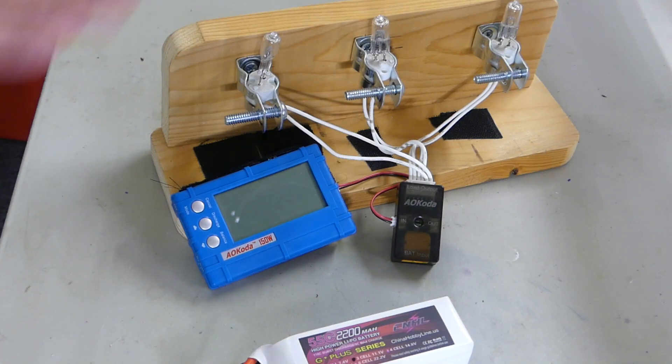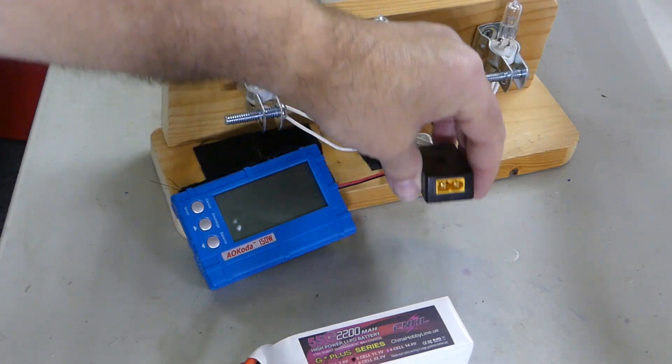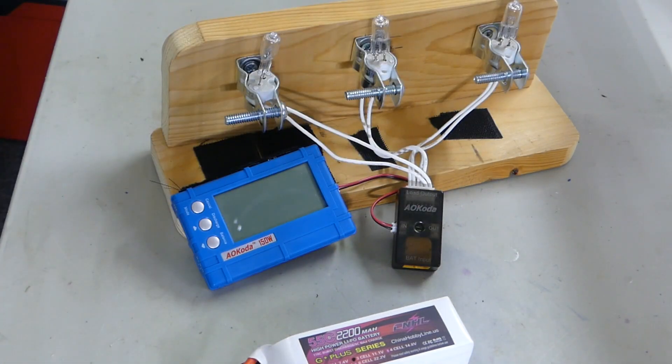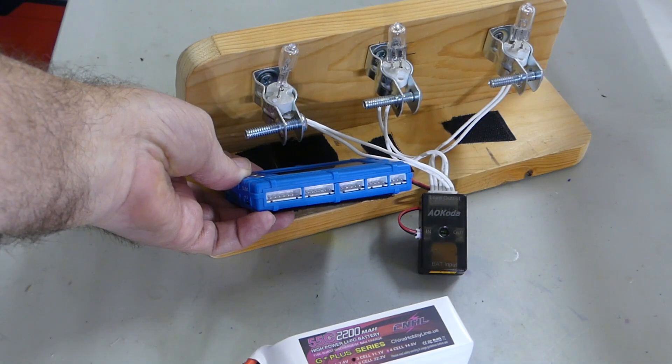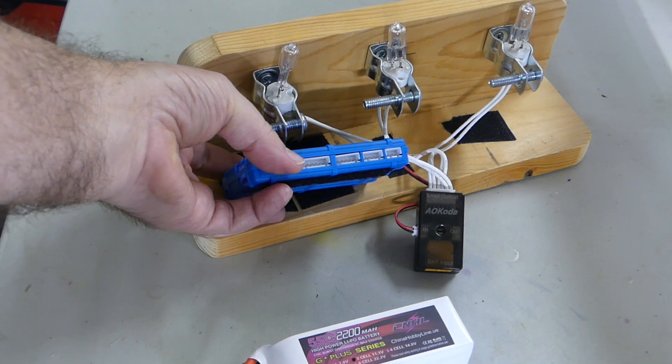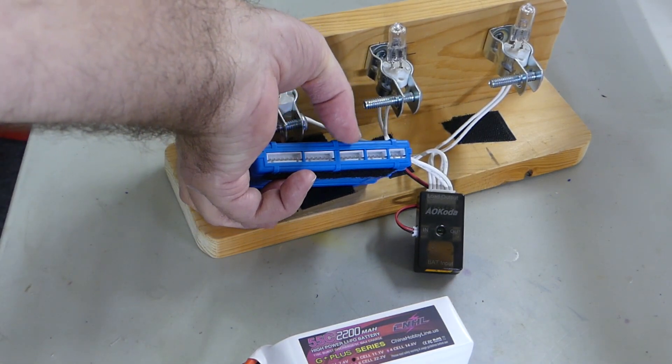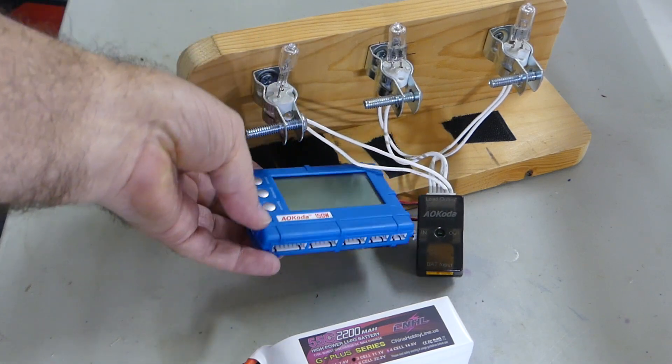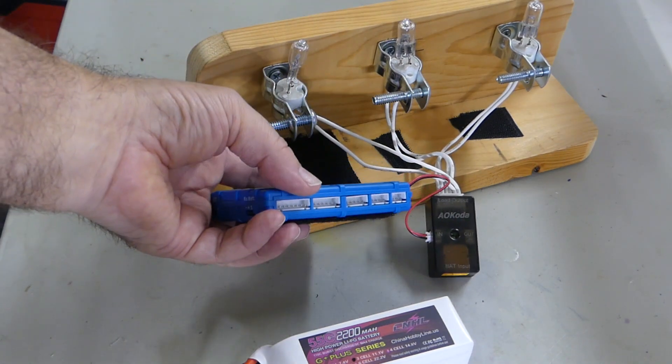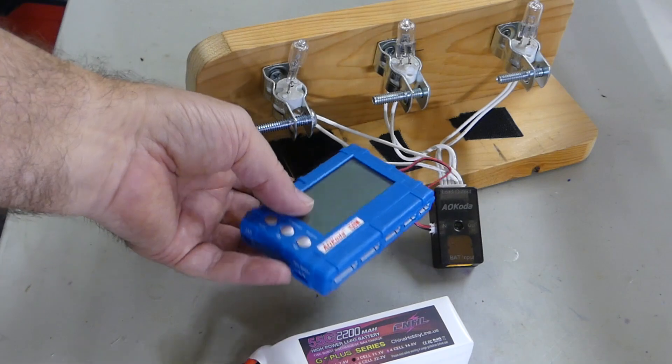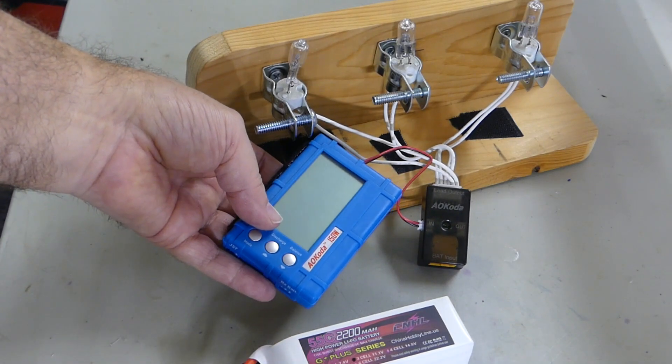By default it comes with an XT60 connector, so if your battery is running something besides that you'll need an adapter. The device itself has your balance port connections on here for 2S, 3S, 4S, 5S, and 6S. So this device, besides having the balance port connectors, is designed to also give you your cell voltages.